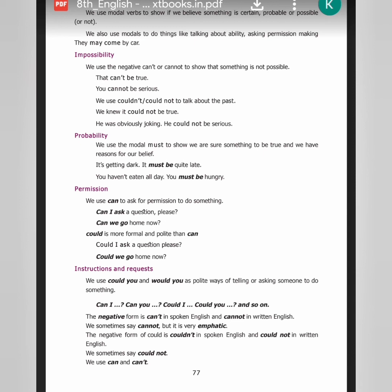We use modal verbs to express certainty, possibility, or impossibility. We use 'can't' or 'cannot' to show something is not possible. For probability, we use 'must' when we are sure about something with reasons — for example, 'It is getting dark, it must be quite late.' For permission, we use 'may' or 'can' — 'Can I ask a question?' 'May I come in?' 'Could I ask a question please?' We use 'could you' and 'would you' as polite ways of making requests.